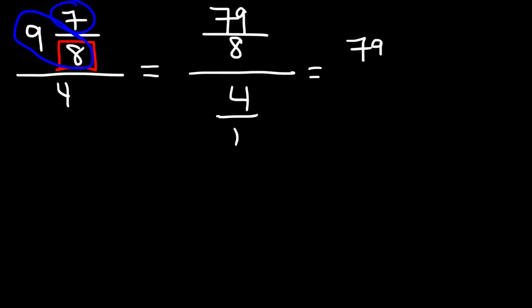So we have 79 over 8 divided by 4 over 1. And that's the same as 79 over 8 times, and don't forget to flip the second fraction, so times 1 over 4.